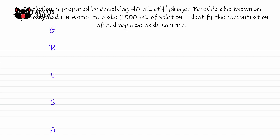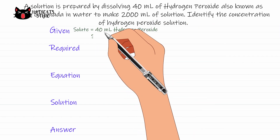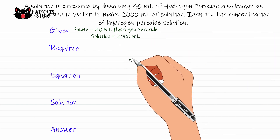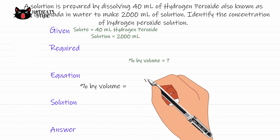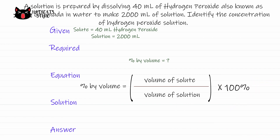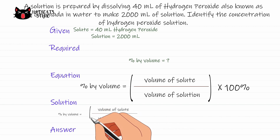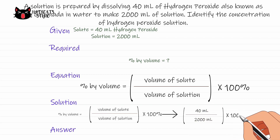Let's identify the concentration of the hydrogen peroxide solution using GRESA. The given values are: volume of solute is 40 milliliters, and volume of solution is 2000 milliliters. We need to find the percentage by volume of the solute. The equation is: percent by volume of solute equals volume of solute over volume of solution, times 100%. Substituting: 40 milliliters of hydrogen peroxide divided by 2000 milliliters of solution, times 100%.